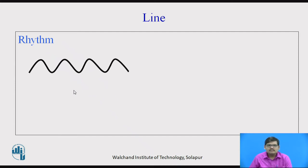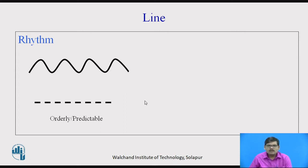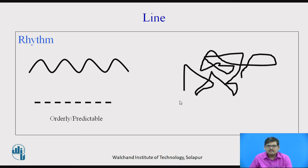Then we have rhythm — a cyclic movement. You can see a sinusoidal wave-like, rhythmic structure created by a curving line. A dotted line is used for many purposes, to show hidden lines as far as engineering drawing is concerned. An orderly or predictable pattern gives a smooth rhythm. A zigzag or random pattern is disordered and unpredictable — you cannot predict the pattern.